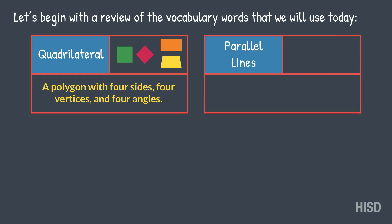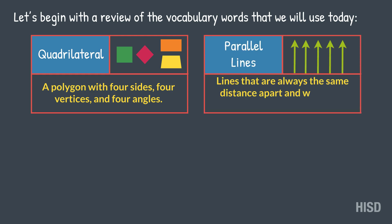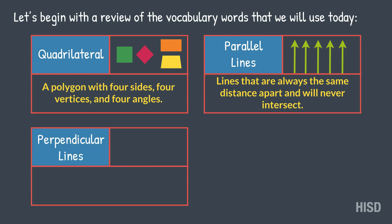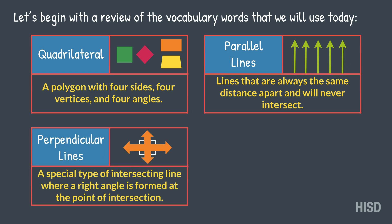Parallel lines: lines that are always the same distance apart and will never intersect. Perpendicular lines: a special type of intersecting line where a right angle is formed at the point of intersection.